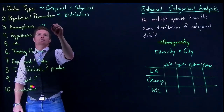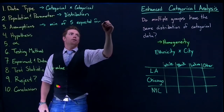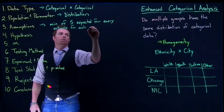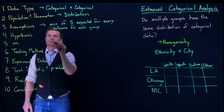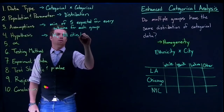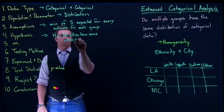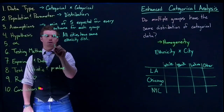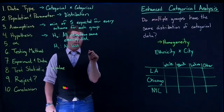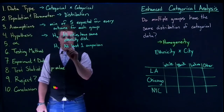We still need to check that the minimum expected value is five for every outcome for each group. Our null hypothesis is that all cities have the same ethnicity distribution, and the alternative hypothesis is that at least one is different from the others, or at least one pairwise comparison is different.